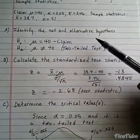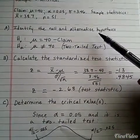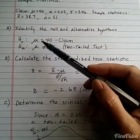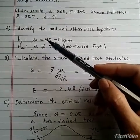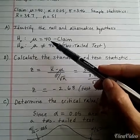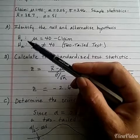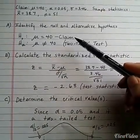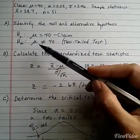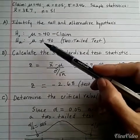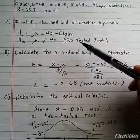First we want to identify the null and alternative hypothesis. We are told that the population mean is equal to 40. The equal sign must always go with the null, so that's going to be the null, and we're also told that's the claim. So the alternative is the opposite, which is not equal to 40. Because of the not equal sign, this is a two-tailed test.